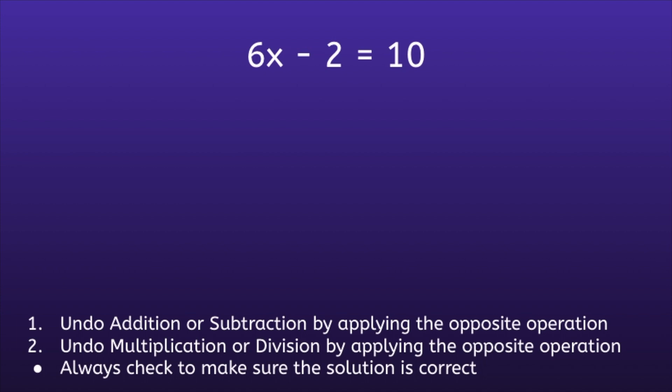The first step to solving a two-step equation is to undo addition or subtraction by applying the opposite operation. If we look at the equation, we can see that there is subtraction. On the side with the x, they are subtracting 2. So we want to do the opposite operation of that, and the opposite of subtracting 2 is adding 2. We're going to apply that on both sides of the equal sign.